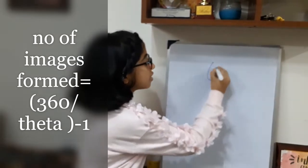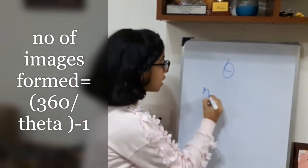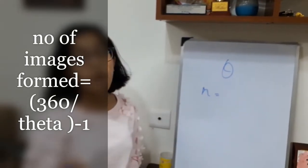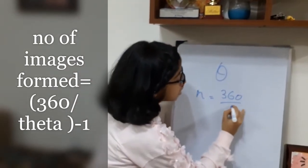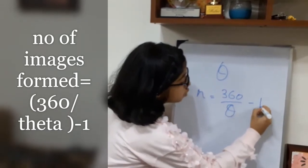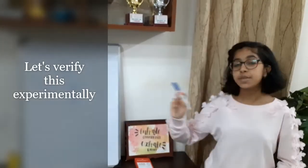If theta is the angle between two plane mirrors, then the number of images formed by them is given by the formula: n equals 360 divided by theta minus 1. Let us verify this experimentally.